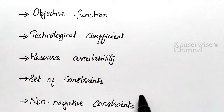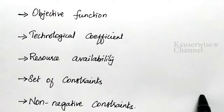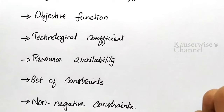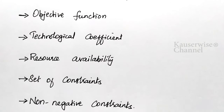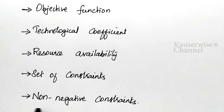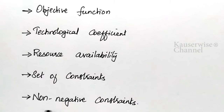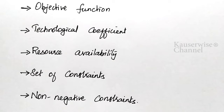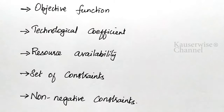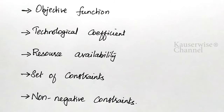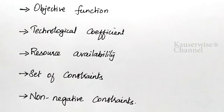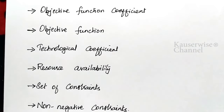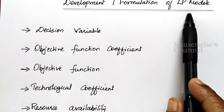A constraint can be lesser than or equal to, or greater than or equal to — this is called the set of constraints, that is, limitations or restrictions. The last one is non-negative constraints: each and every decision variable in the LPP model is a non-negative constraint — it should be positive only. These are the various components required to formulate an LPP model.